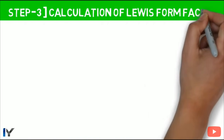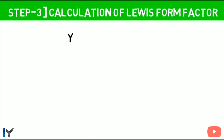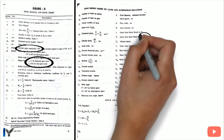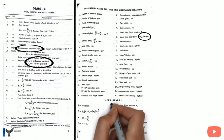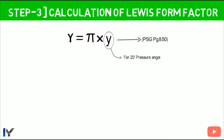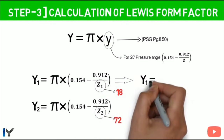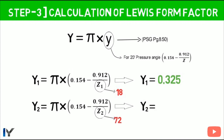Step 3: Calculation of Lewis form factor. We must find this value to determine which member is weaker — pinion or gear. The equation is Y = π × y, given on PSG page 8.50, where small y is the Lewis constant selected according to pressure angle. Using Z1 = 18 and Z2 = 72 with the 20° pressure angle table, we get Y1 = 0.325 and Y2 = 0.444.